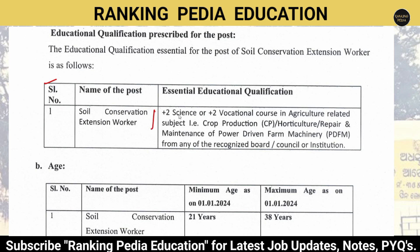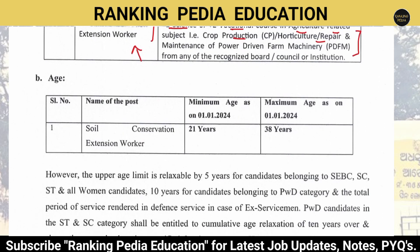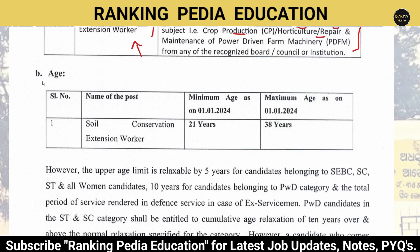The essential education qualification for Soil Conservation Extension Worker is Plus Two Science or Plus Two Vocational Course in agriculture-related subjects such as Crop Production, Horticulture, or Repair and Maintenance of Power Driven Farm Machinery from any recognized board, council, or institution.